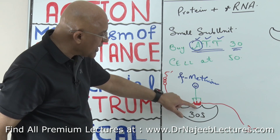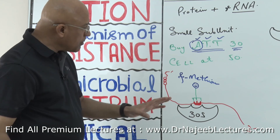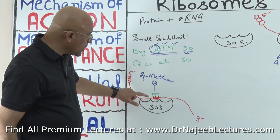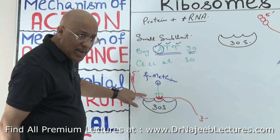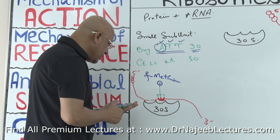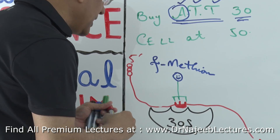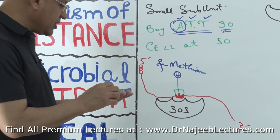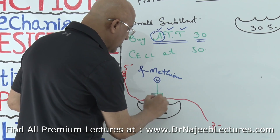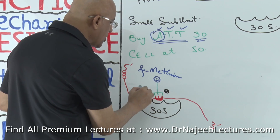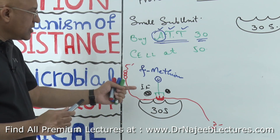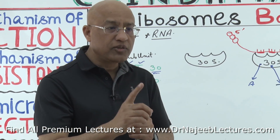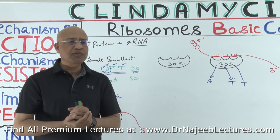This amino acid along with its transfer RNA matches here — the anticodon of the tRNA matches the codon of the messenger RNA. So for the initiation complex we have: number 1 — the 30S subunit; number 2 — the messenger RNA; number 3 — the tRNA carrying formyl methionine; and number 4 — initiation factors.